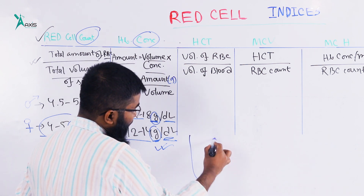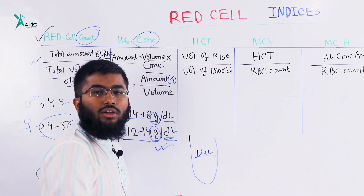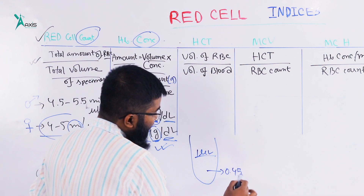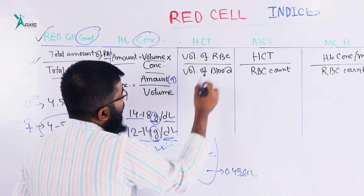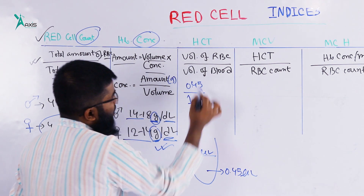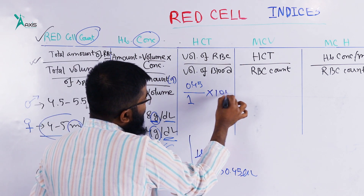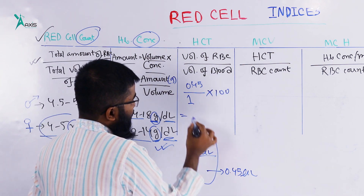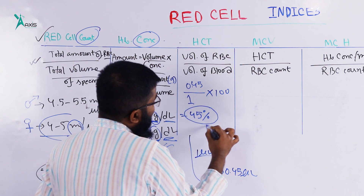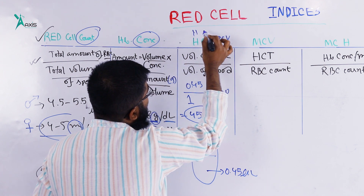If we take 1 microliter of blood, and 0.45 microliters of it is red blood cells, then the volume of RBC equals 0.45 out of a total of 1. That gives us 45 percent — this is the hematocrit, or PCV (packed cell volume).